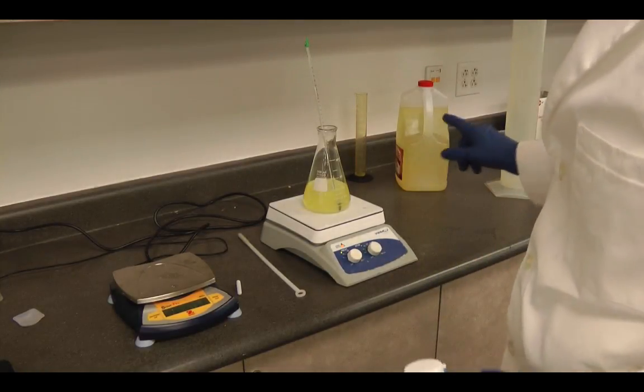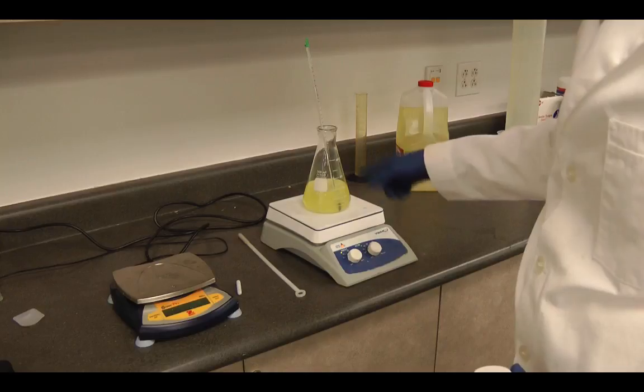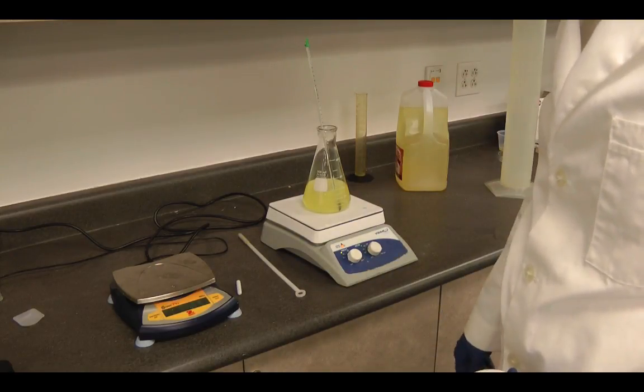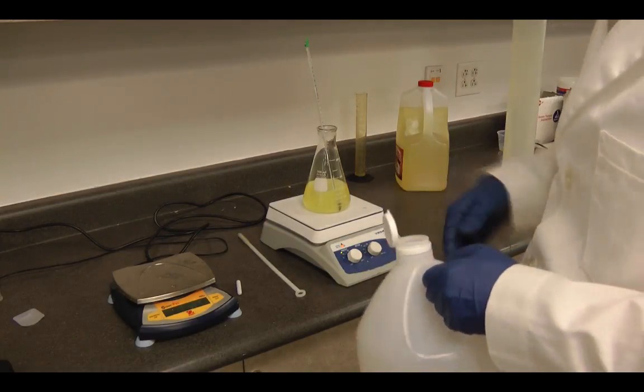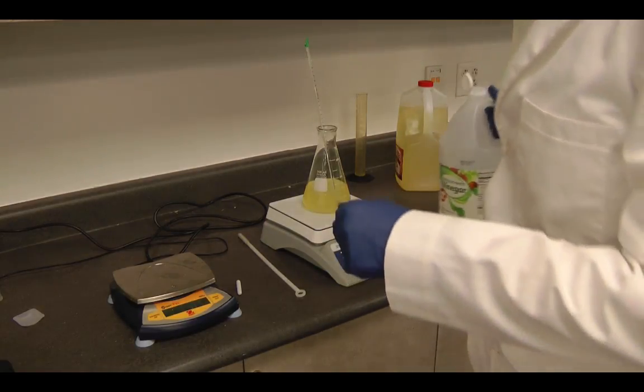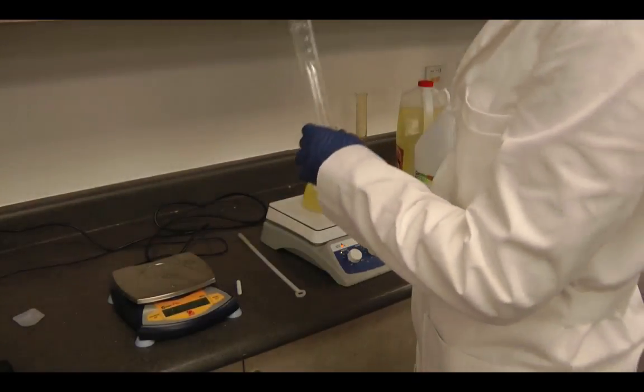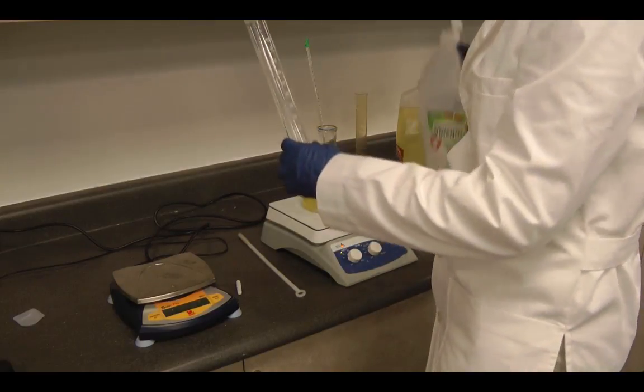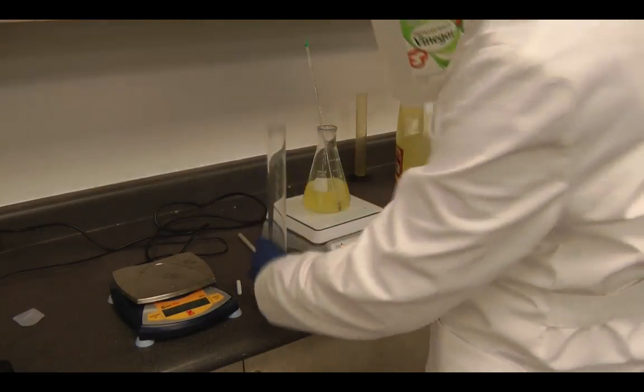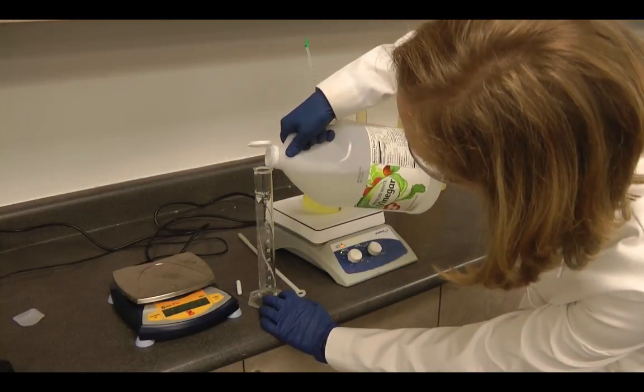So at this point, the reaction has been proceeding and we've got this mixing for a half an hour. And now we need to neutralize the solution because we still have that sodium hydroxide sitting in there. And so we're going to use a little bit of vinegar. So we're going to measure 50 milliliters of vinegar. And that's how we'll neutralize it.